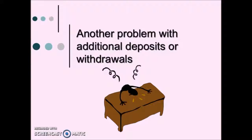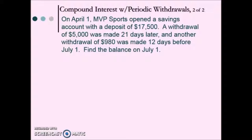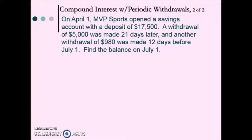Here's another example where withdrawals are occurring. On April 1st, MVP Sports opened a savings account with a deposit of $17,500. A withdrawal of $5,000 was made 21 days later. Another withdrawal of $980 was made 12 days before July 1st. Find the balance on July 1st. To solve a problem with a withdrawal, we reverse our thinking a little bit to calculate this.